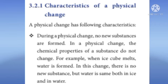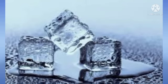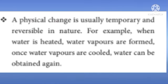Characteristics of a physical change: During a physical change, no new substances are formed. In a physical change, the chemical properties of a substance do not change. For example, when an ice cube melts, water is formed — there is no new substance, as water is the same both in the ice and in liquid form. A physical change is usually temporary and reversible in nature. For example, when water is heated, water vapors are formed; once the water vapors are cooled, water can be obtained again.